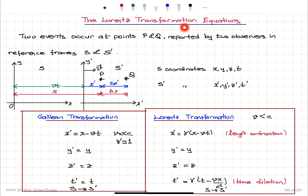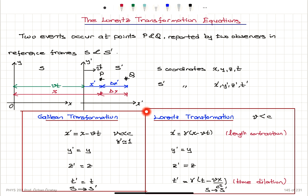The Lorentz transformation equations. By considering the time dilation and length contraction effects, the Galilean transformation equations can be modified to have a relativistic correction. The set of equations that we obtain are called Lorentz transformation equations.